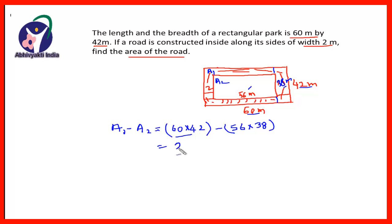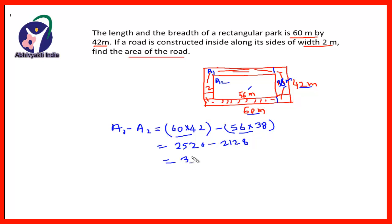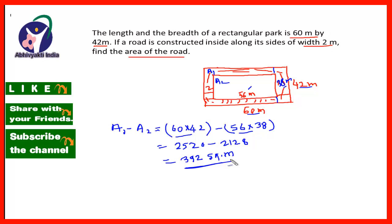60 into 42 gives 2520, minus 56 into 38 which gives 2128. The difference is 392 square meter. Therefore the area of the road is 392 square meter.